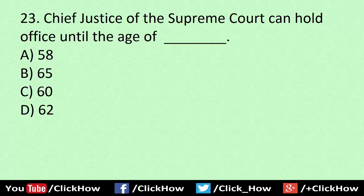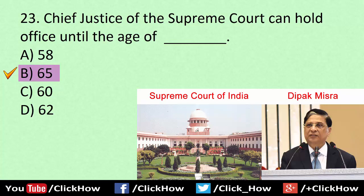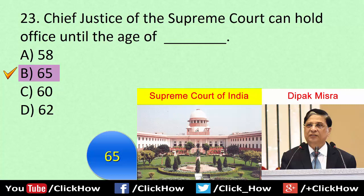The Chief Justice of the Supreme Court can hold office until the age of 65. Another related GK question: the retirement age of Supreme Court judges is also 65. The current Chief Justice of the Supreme Court is Deepak Mishra.